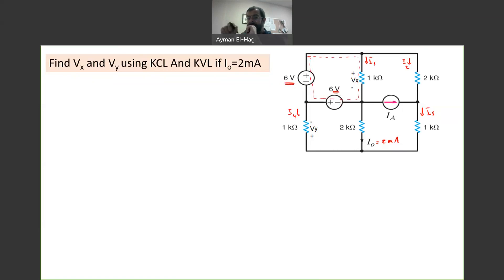Every other branch that makes this loop, we have its voltage. So if I apply KVL to this loop, loop number 1, I can find VX in one step.